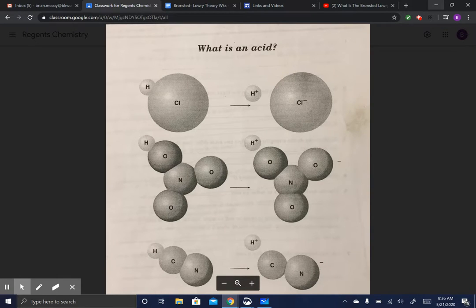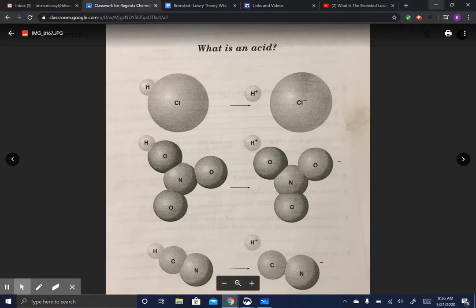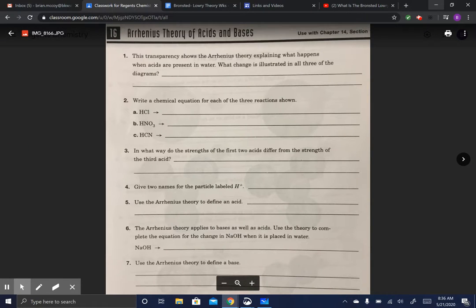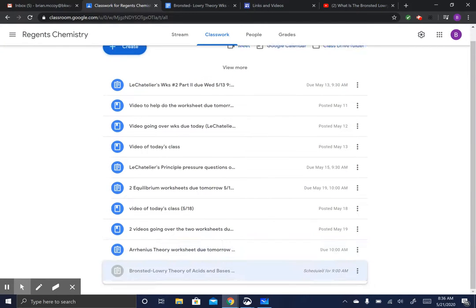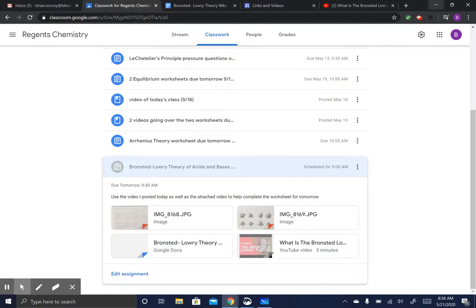So this was the back of the worksheet that was due today, and the front was here. So let me go over this, and then I will briefly explain Bronsted-Lowry. This is going to be posted today at 9 a.m., it's 8:36 right now. So there's a video here, three minutes, it's worth watching to help understand the theory, then you got the worksheet and the attached doc. That video will help, and this video will help. Alright, here we go, the homework due today.